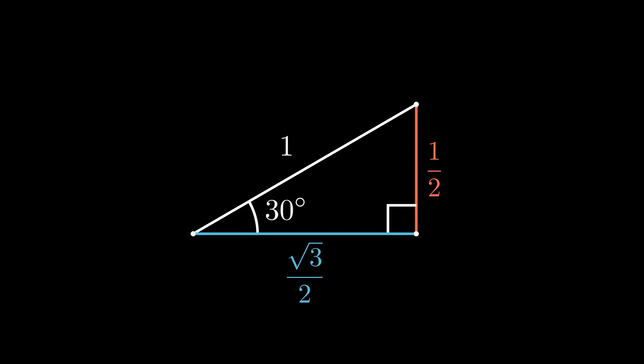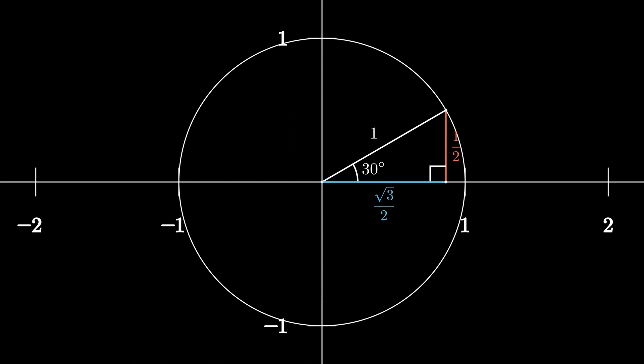Let's apply these special triangles on unit circle. So, take 30 degrees for example. We can build a 30, 60, 90 triangle inside the unit circle. So the coordinates for 30 degrees are root 3 over 2 comma 1 half.